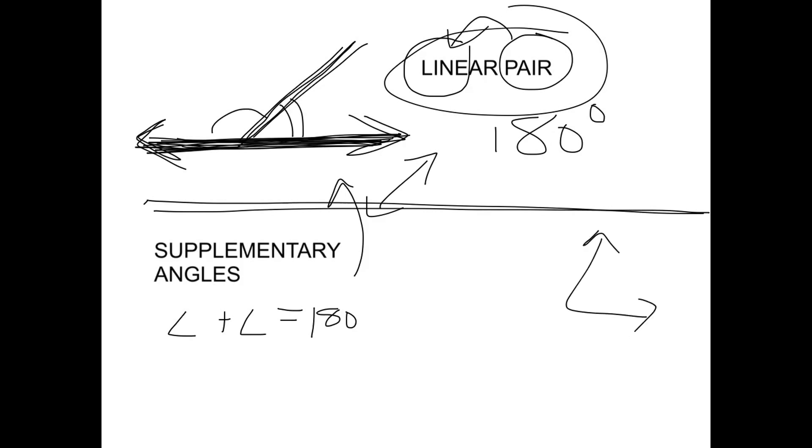Except supplementary angles don't have to be adjacent and making a line. They can just be an angle right here that's 79 degrees and then an angle right here that's 101 degrees and they don't have to be attached. This one can be over here hanging out in New Zealand with Lord of the Rings and this one can be over here in New Mexico hanging out with Bryan Cranston from Breaking Bad.